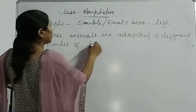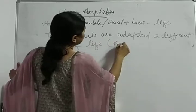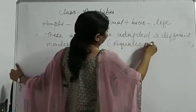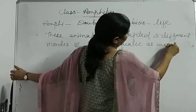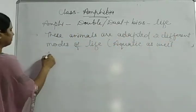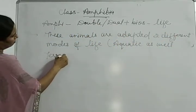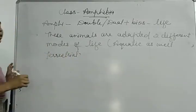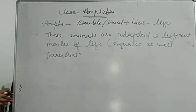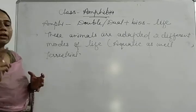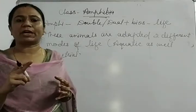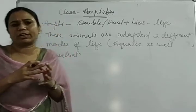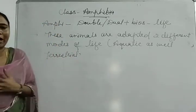Which two modes of life? Aquatic as well as terrestrial. These animals are adapted for two different modes of life because of their evolutionary history — they were among the first animals to transition from water to land.